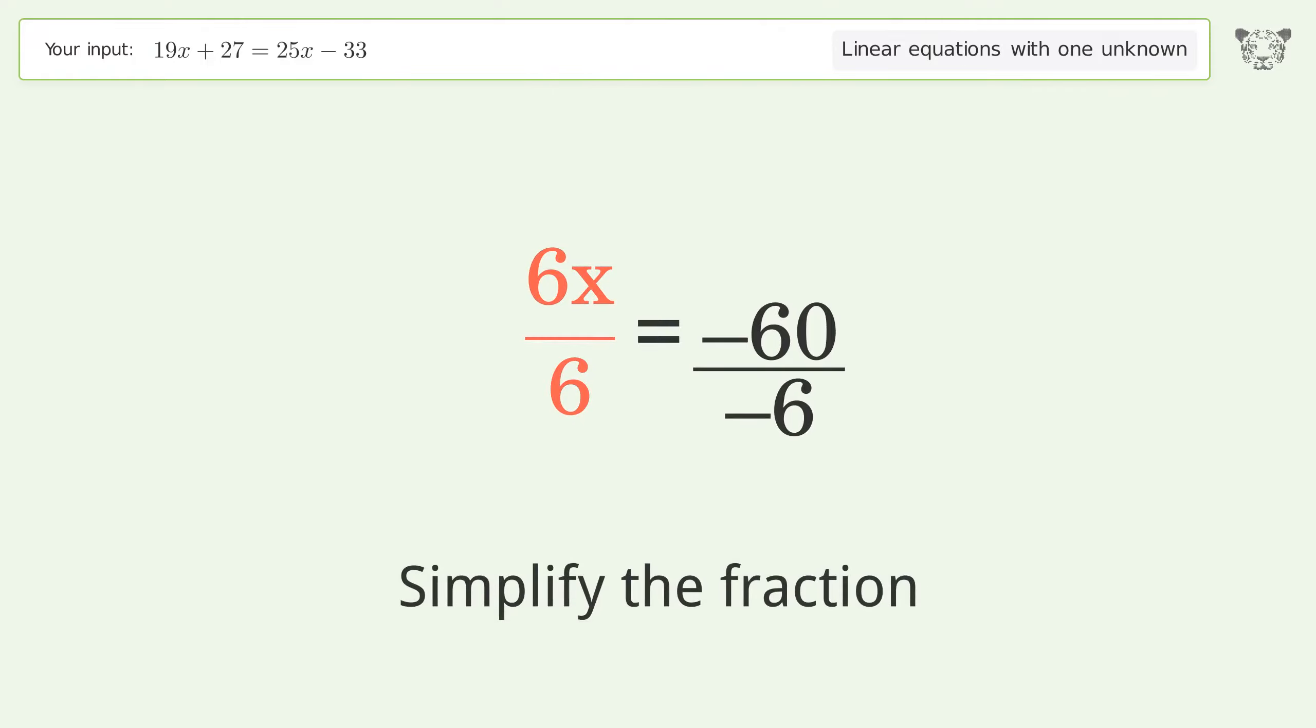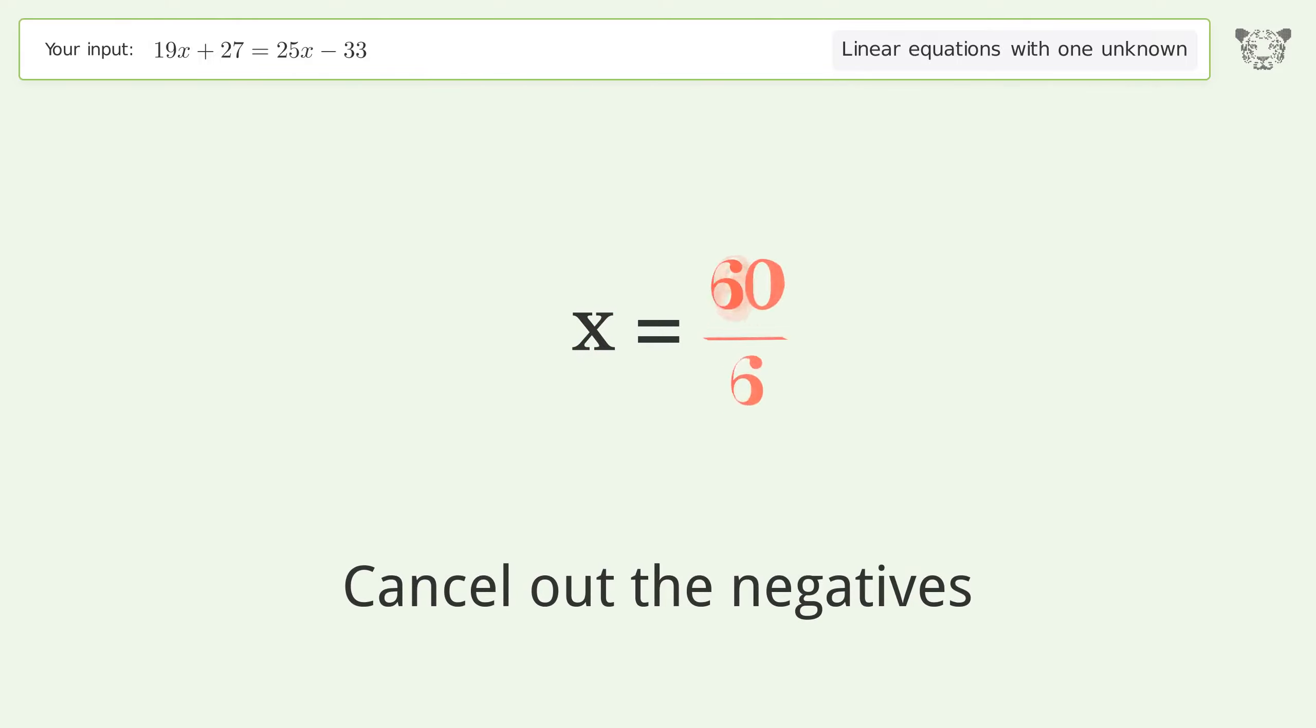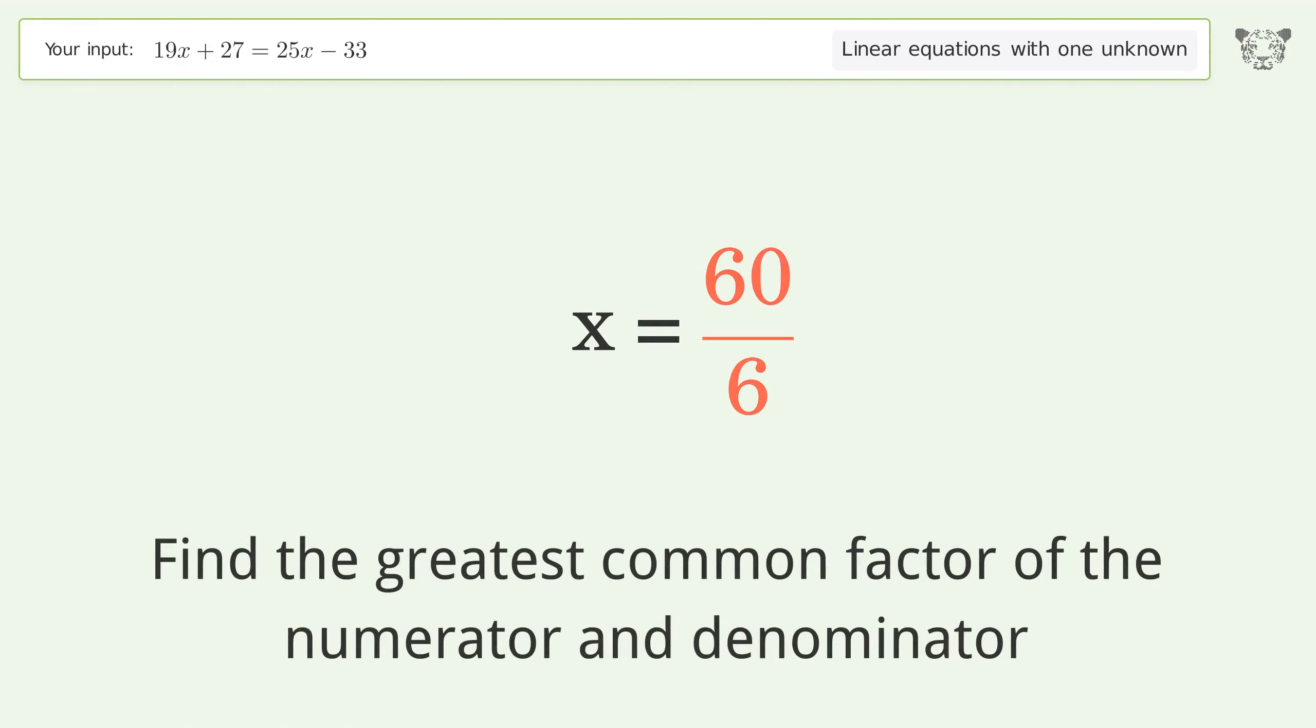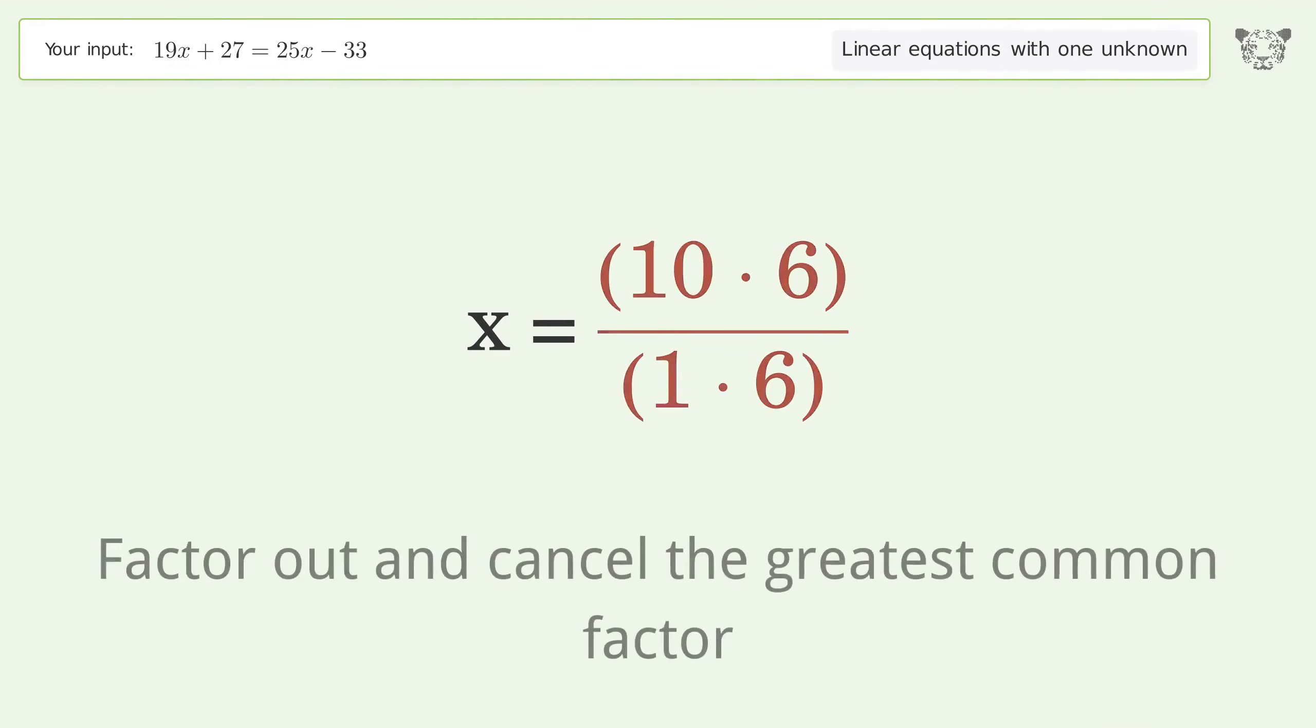Simplify the fraction. Cancel out the negatives. Find the greatest common factor of the numerator and denominator. Factor out and cancel the greatest common factor.